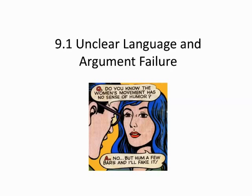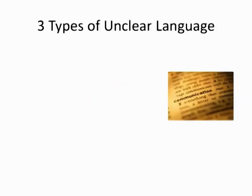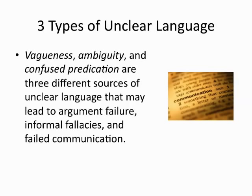Essentially, there are three sources for our failure to linguistically communicate: vagueness, ambiguity, and confused predication. When we slip into these miscues of speech, we often undermine our own arguments by committing fallacies or failing to effectively communicate our intent.